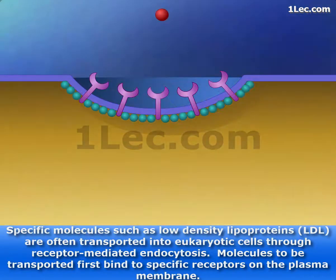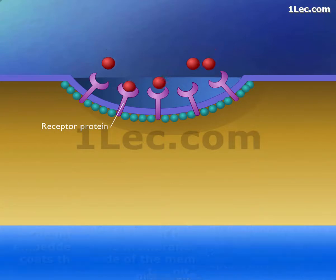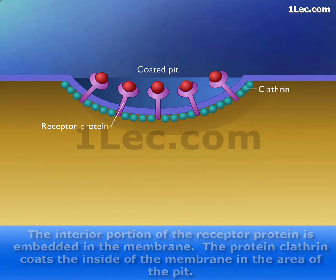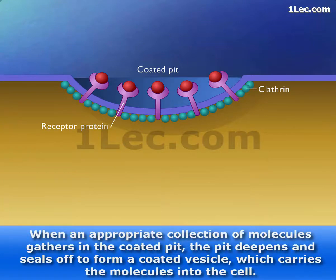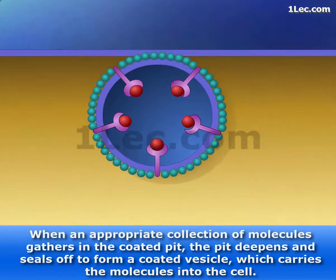Specific molecules, such as low-density lipoproteins (LDL), are often transported into eukaryotic cells through receptor-mediated endocytosis. Molecules to be transported first bind to specific receptors on the plasma membrane. The interior portion of the receptor protein is embedded in the membrane. The protein clathrin coats the inside of the membrane in the area of the pit. When an appropriate collection of molecules gathers in the coated pit, the pit deepens and seals off to form a coated vesicle, which carries the molecules into the cell.